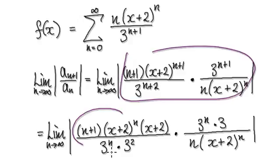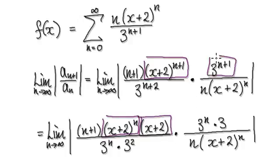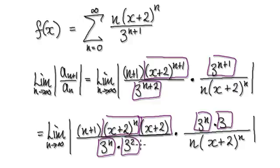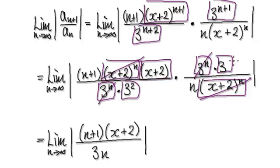Now tidy this whole thing up. That will give you this because if you look at this block here, visualize it as one block multiplying with another block. Then visualize this block here as being 3 to the power of n times 3, and visualize this as being 3 to the power of n times 3 squared. Now this block will cancel out with this block here, and then this block will cancel out with this block. Then this 3 here will cancel out with one of the 3s, which will give you one 3.